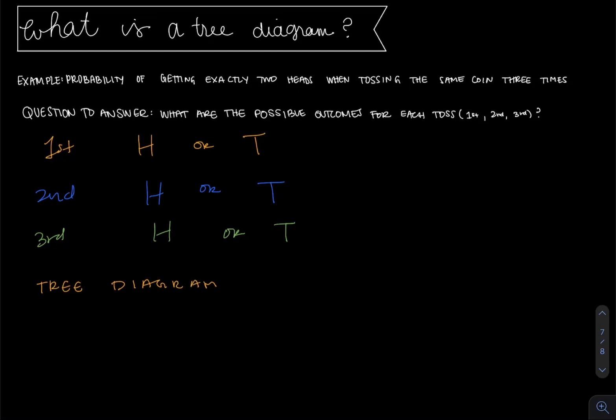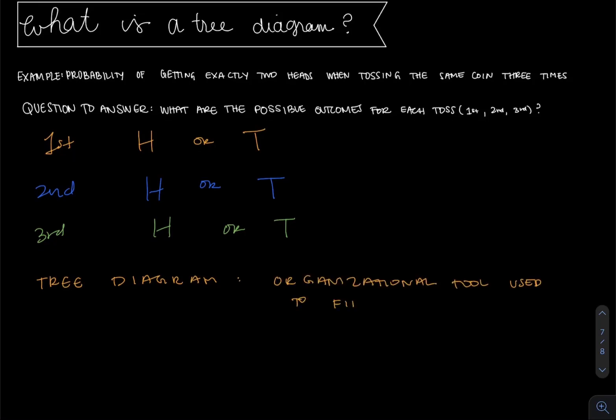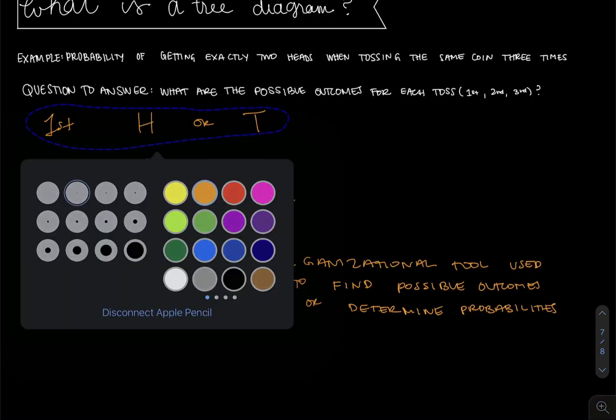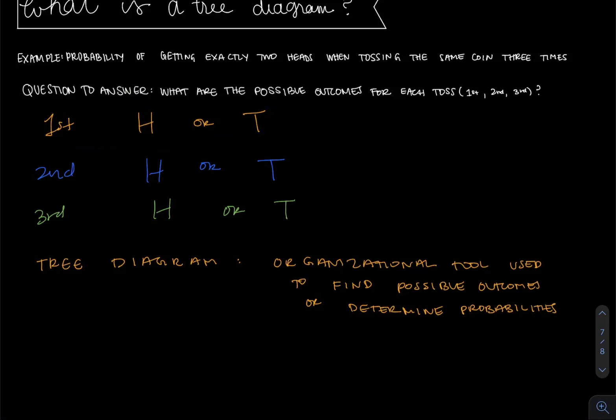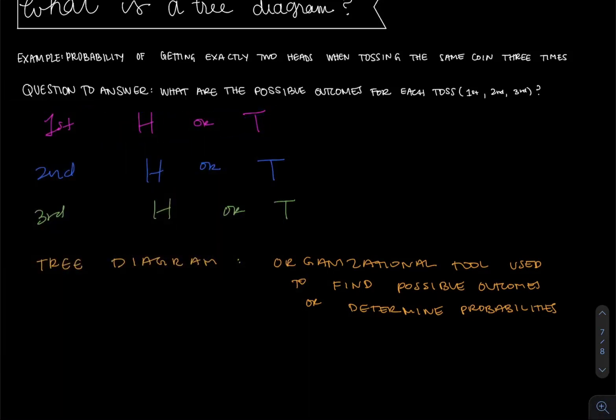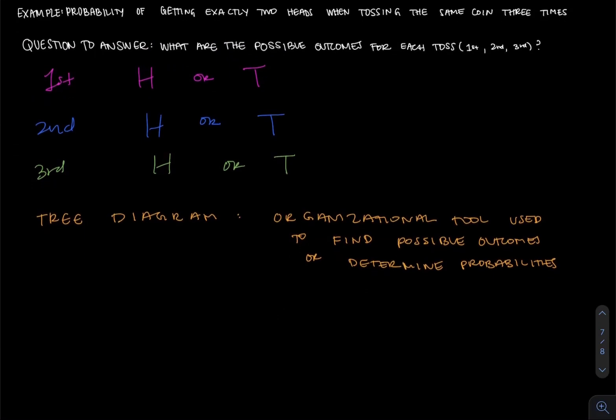A tree diagram is simply an organizational tool used to find possible outcomes or determine probabilities. And matter of fact, let's change the first stage up here to be a different color than orange. Pink is a little bit easier to see on the screen. That way we know that each value is happening at a different stage.